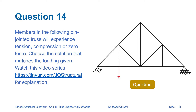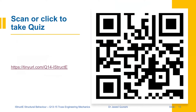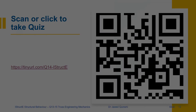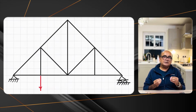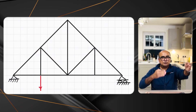You have to solve this problem without any complex math and choose the correct option from four choices. Put your answer in the comments below. You can also go to the URL or scan the barcode to take the quiz before watching further. In this problem, first I want to determine the zero force members. Can you see any member coming out of two co-linear members?